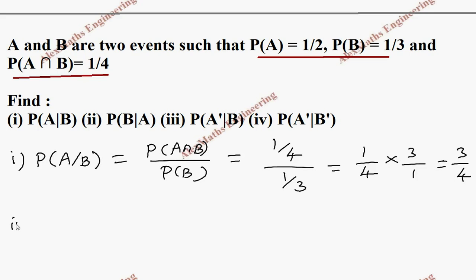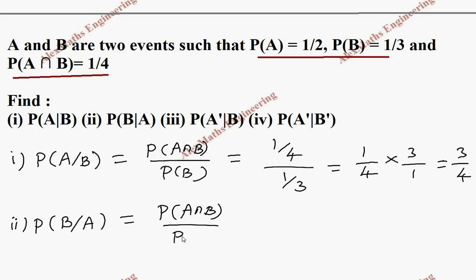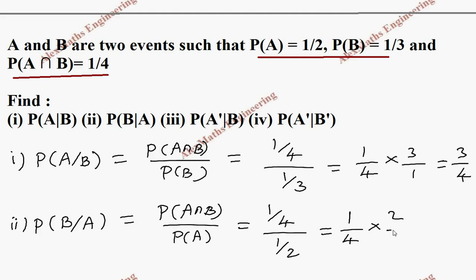In the second subdivision, they want P(B|A) = P(A∩B) / P(A) = (1/4) / (1/2). After cancelling, we get 1/2.